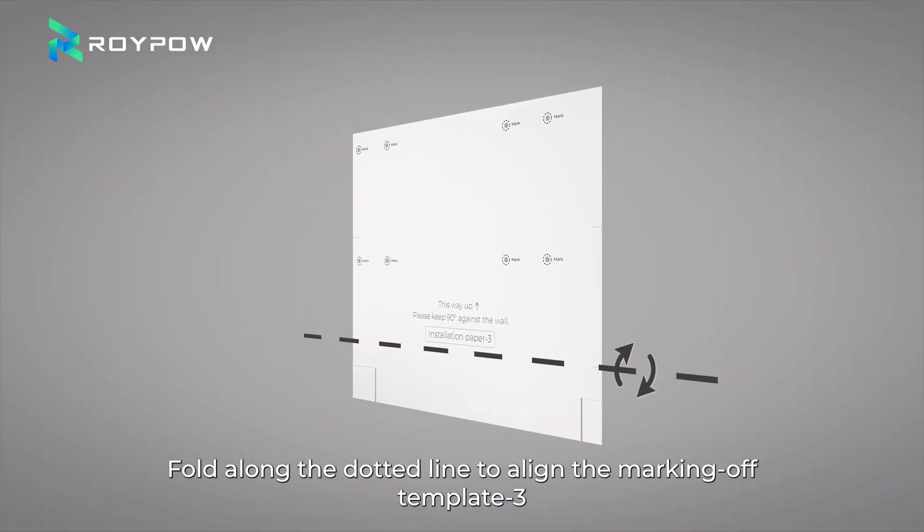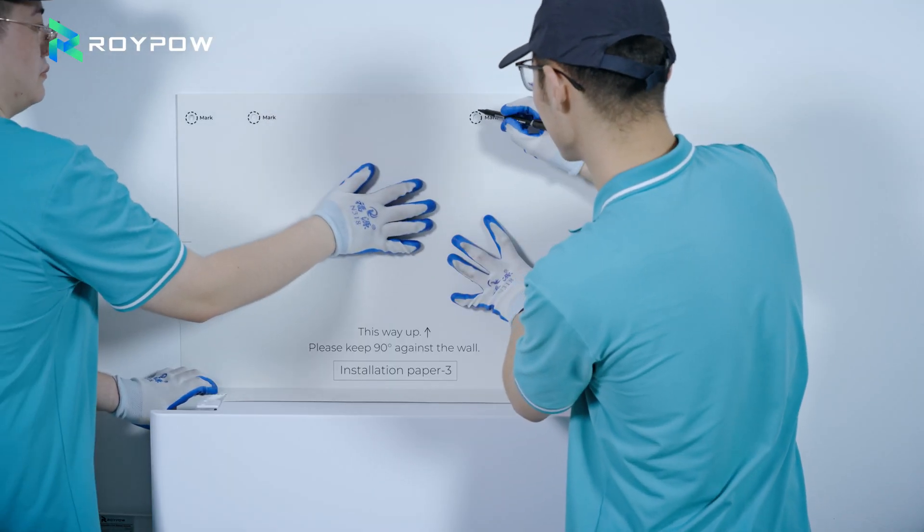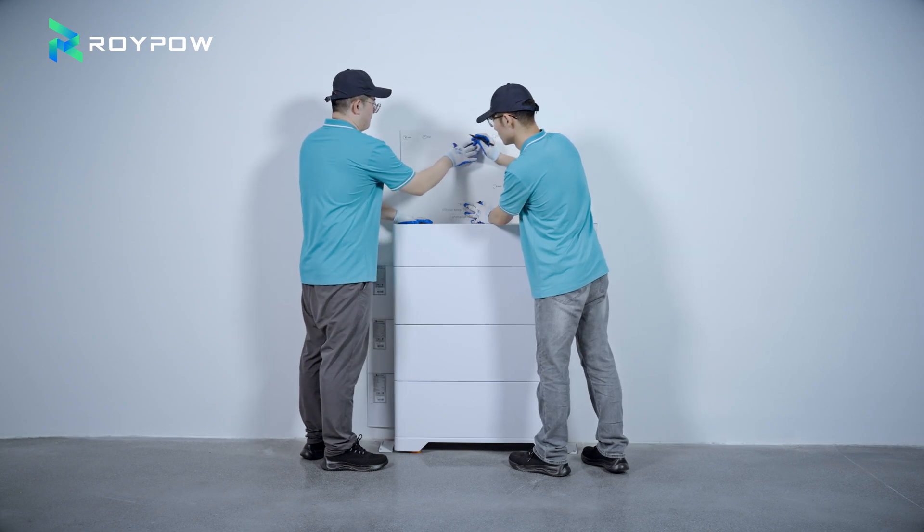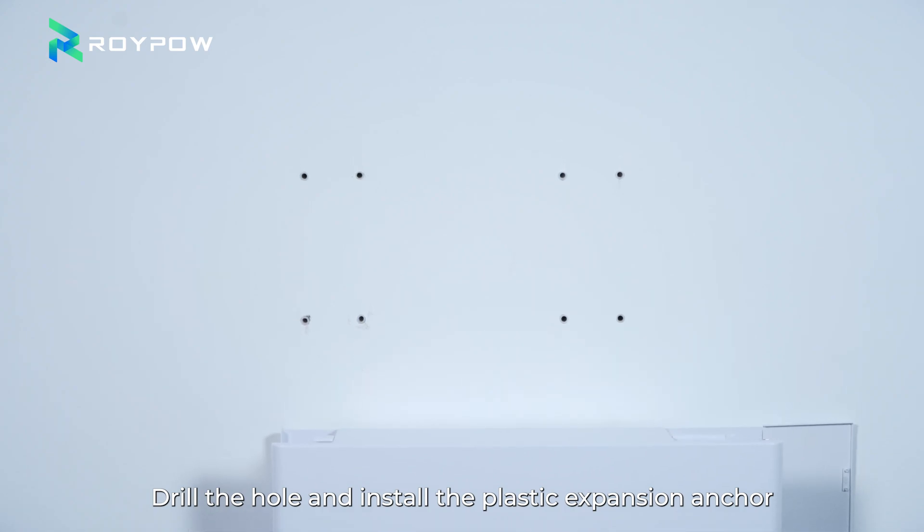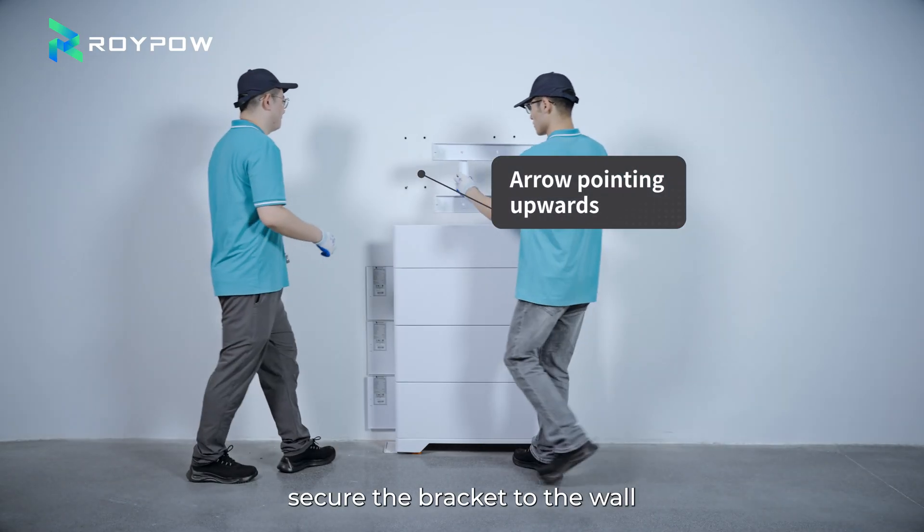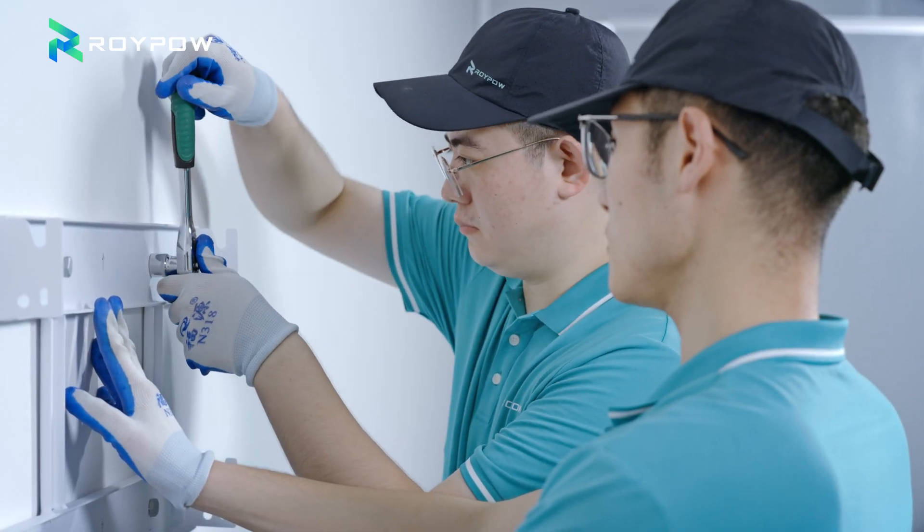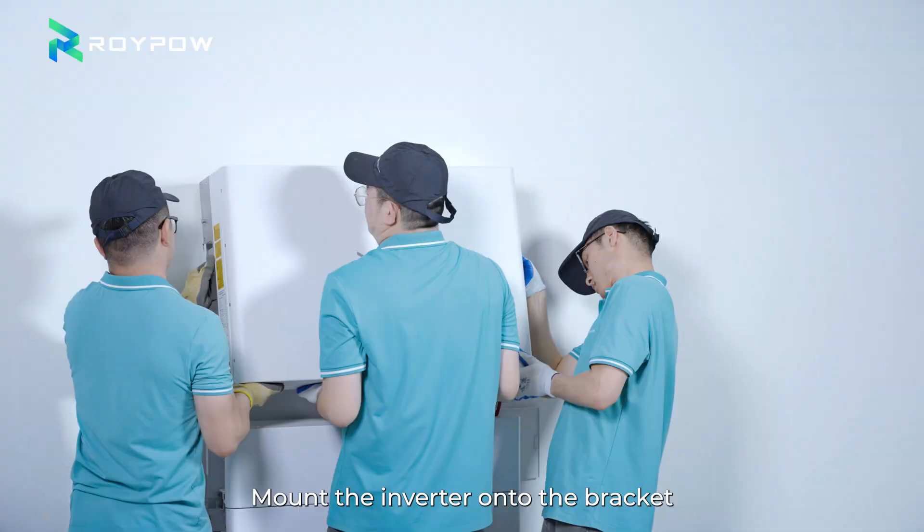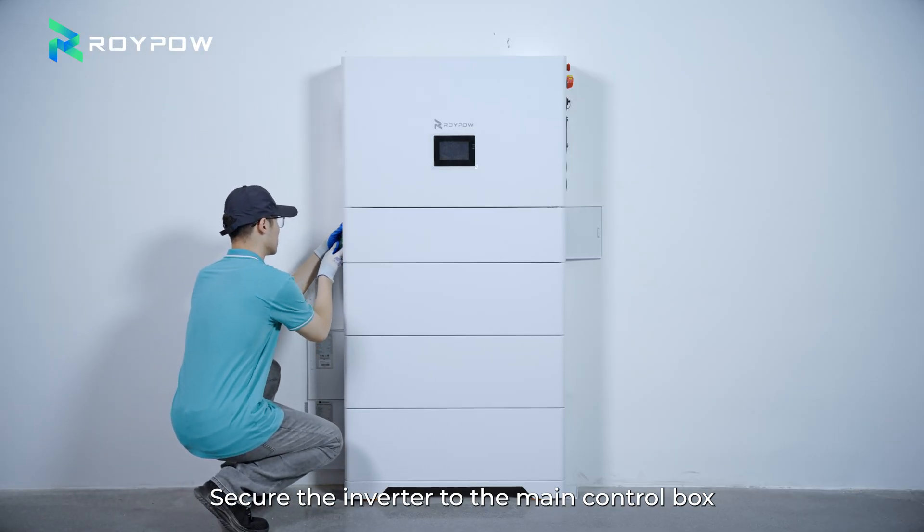Fold along the dotted line to align the marking off template 3. Place it on the main control box and mark the positions of the 8 holes. Use an M13 drill bit. Drill the hole and install the plastic expansion anchor. Take out the inverter bracket with the arrow pointing upwards. Then, secure the bracket to the wall. Mount the inverter onto the bracket. Secure the inverter to the main control box.